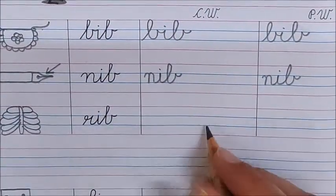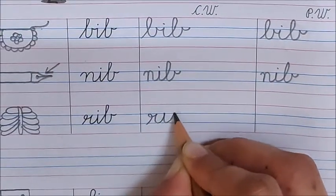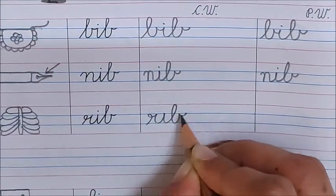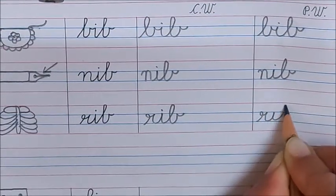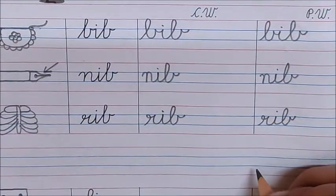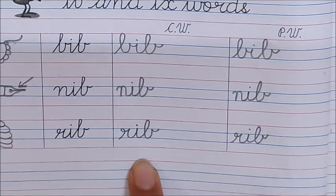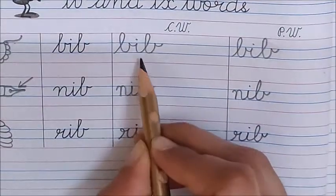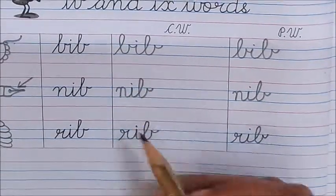Next word is Rib. R, i, b. See children bib, nib, rib. They all are rhyming words. They belong to ib family. Ib, ib, ib.